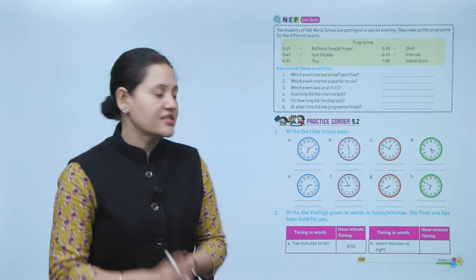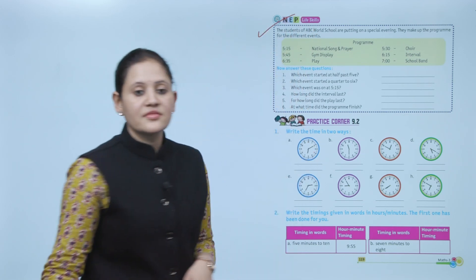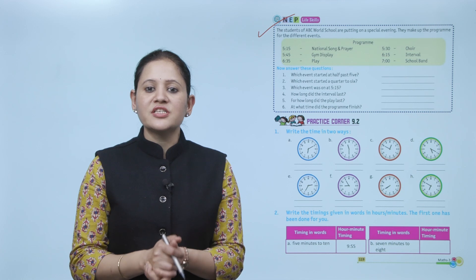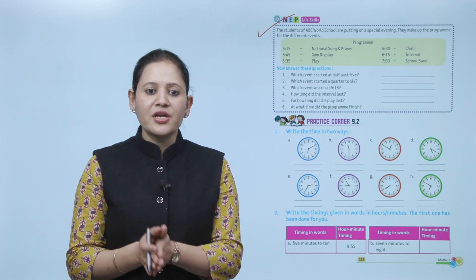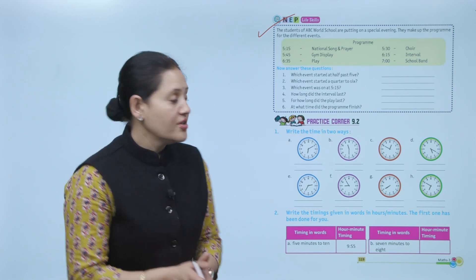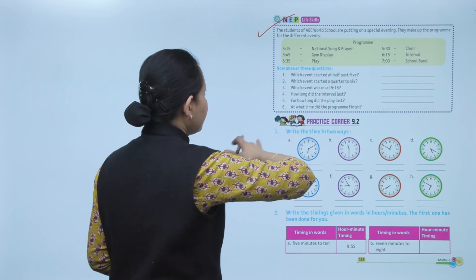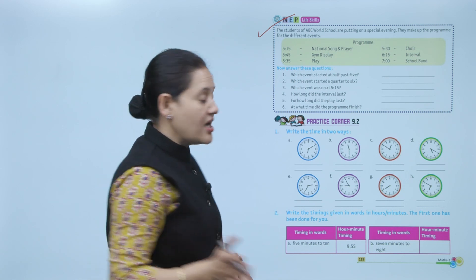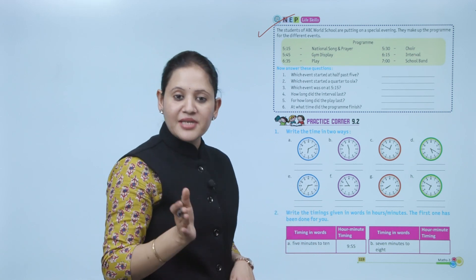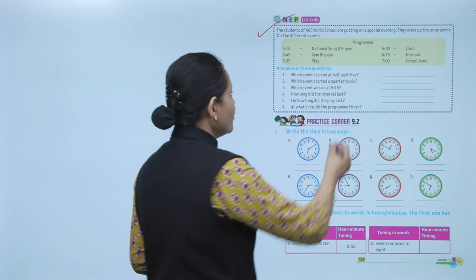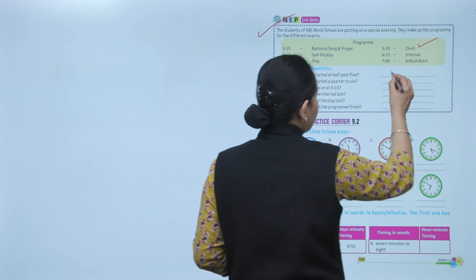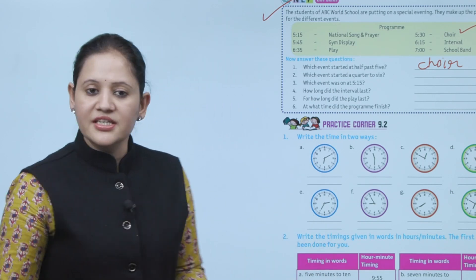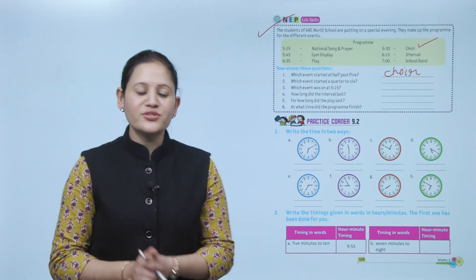Next, Life Skills. The students of ABC World School are putting on a special evening. They make up a program of different events. Some programs and their timings are given. Which event starts at half past 5? Half past 5 means 5:30, so choir singing will start at 5:30.